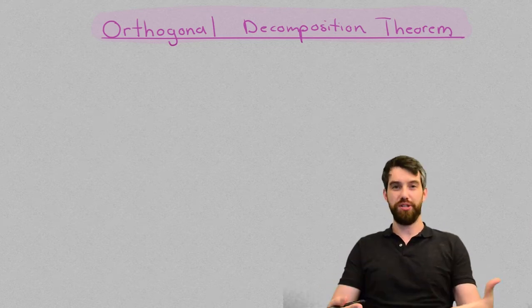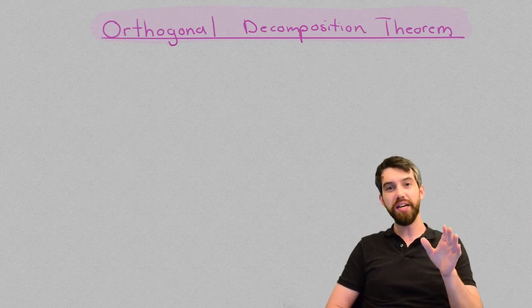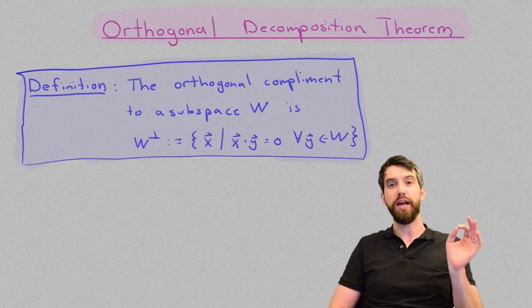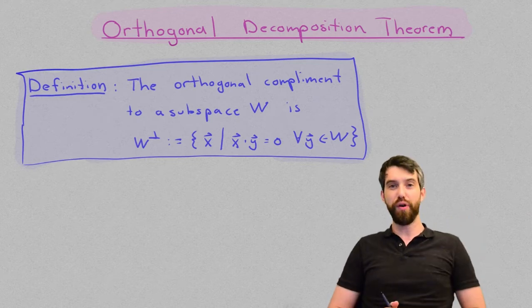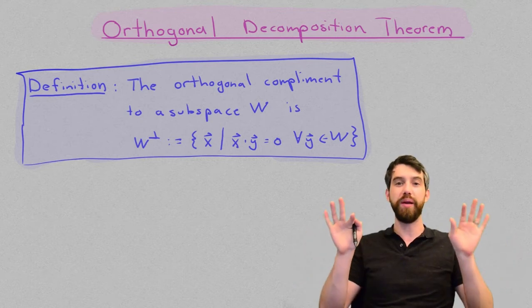So, the first idea I want to introduce on the way to this big theorem is the idea of the orthogonal complement of a particular set. So, the definition of an orthogonal complement is this. Suppose you have some subspace, a subspace w.